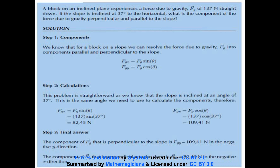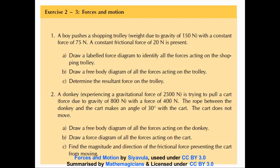Now we're going to look at an exercise on the next slide — Exercise 2.3, Forces and Motion. For number one, a boy pushes a shopping trolley with a weight due to gravity of 150 Newtons, with a constant force of 75 Newtons. A constant friction force of 20 Newtons is present. The first question asks us to draw a labeled force diagram to identify all the forces acting on the shopping trolley.